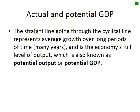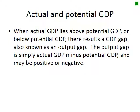Regarding actual and potential GDP: the dotted line represents average growth over long periods of time and the economy's full level of output — also known as potential output or potential GDP — where all factors of production are being used efficiently. When actual GDP lies above or below potential GDP, there results what we call a GDP gap, also known as an output gap. The output gap is actual GDP minus potential GDP, and it might be positive if above or negative if below.